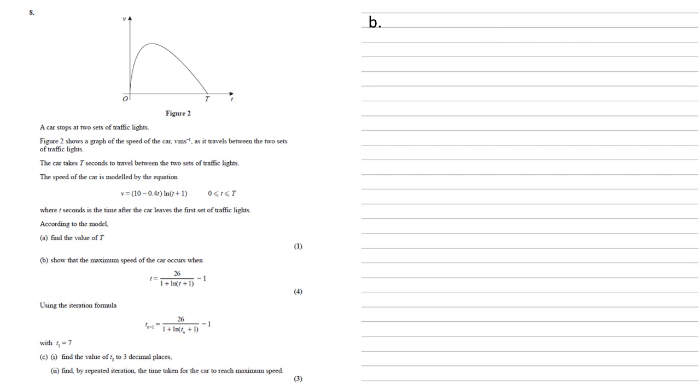Part b, we need to show that the maximum speed of the car occurs when t is equal to 26 over 1 plus ln t plus 1 minus 1. So we're trying to find the maximum. So to do this, we're going to differentiate our formula for v and set it equal to zero. v is the product of two functions of t. So we're going to use the product rule here.